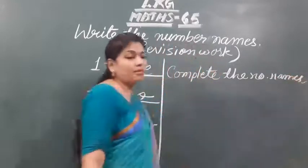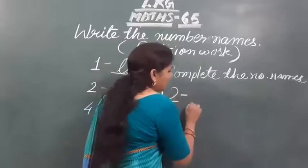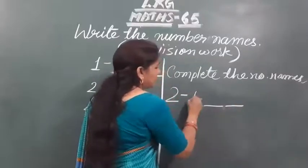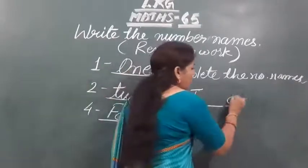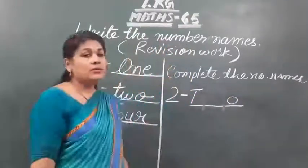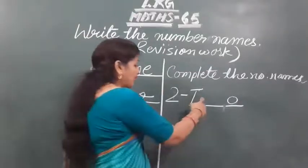Complete the number names. Suppose here is given two, and here is written T. You are given T. You know what is the spelling of two. So you have to complete it here.